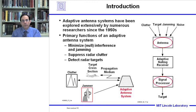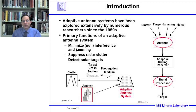By way of introduction, adaptive antenna systems have been explored extensively by numerous researchers since the 1950s. The primary functions of an adaptive antenna system are to minimize jamming, suppress radar clutter, and detect radar targets. In the context of an adaptive communication system, it would minimize jamming and maximize the signal-to-noise ratio from desired communication users. In this lecture, we'll be describing a multiple beam antenna adaptive nulling system.